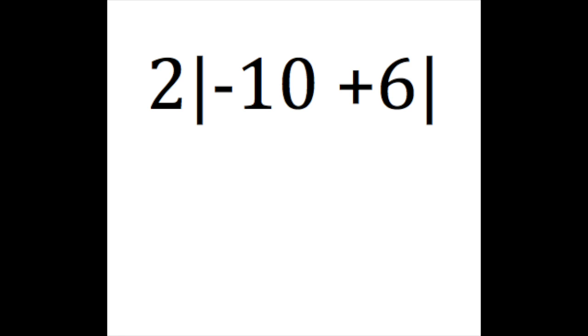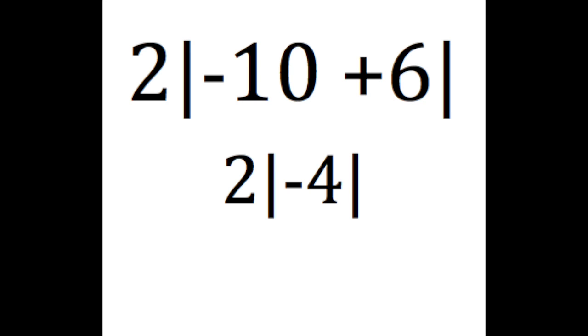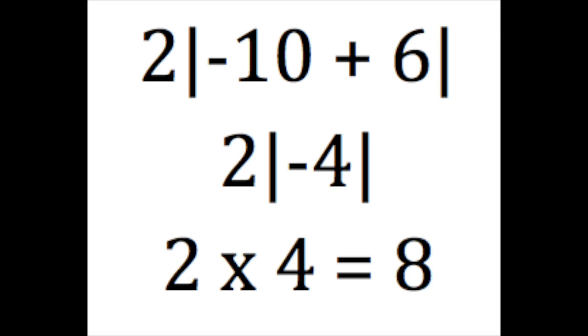In this case, we first have to solve what is in the absolute value. So, we take negative ten plus six, and we get negative four. So, we multiply two times the absolute value of negative four. So, that is two times four, which equals eight.